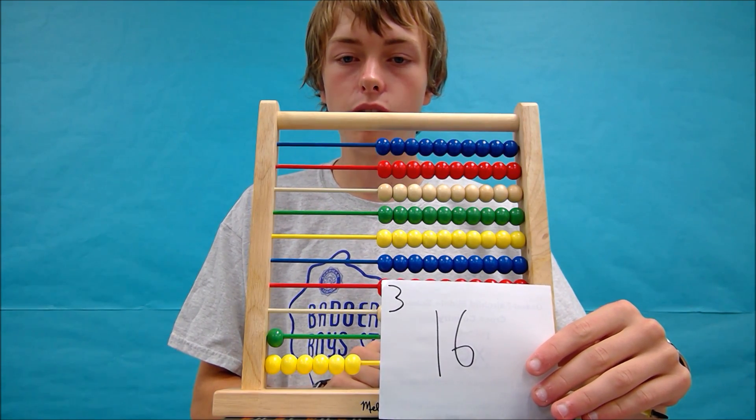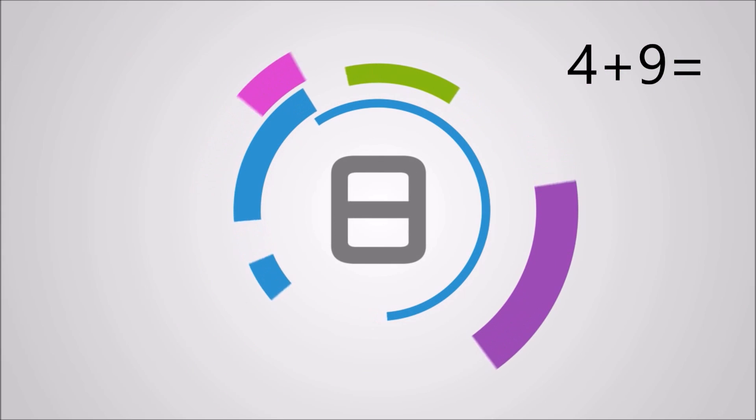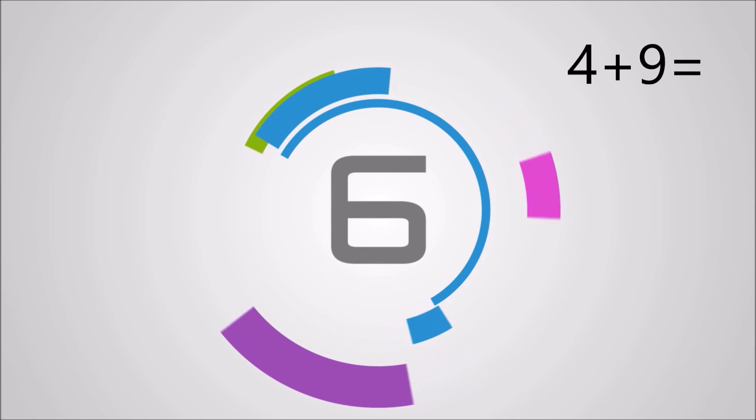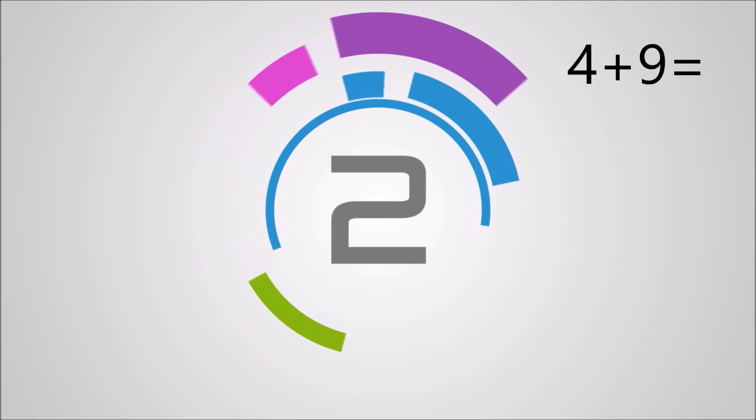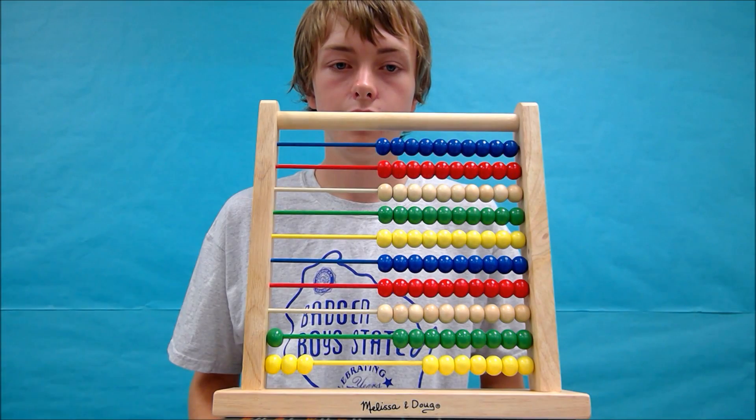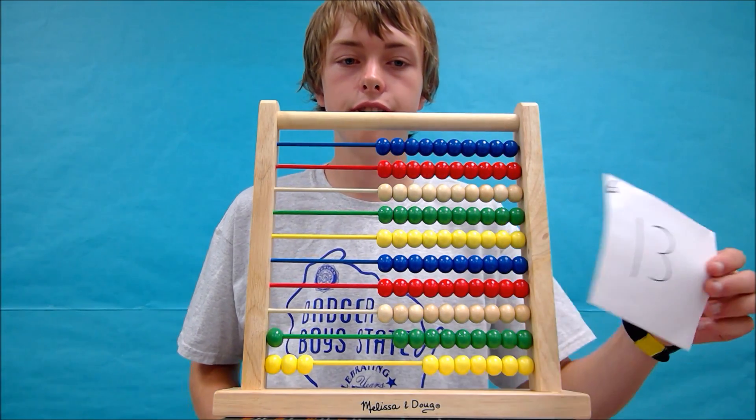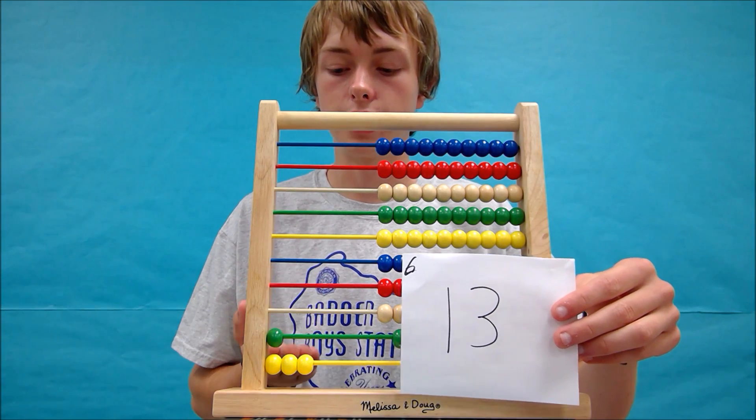Lastly, let's solve 4 plus 9. You should get 13 as your answer, and your abacus should look like this.